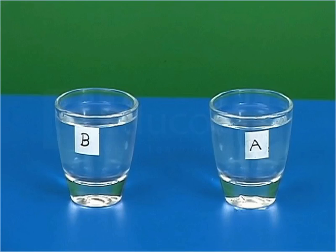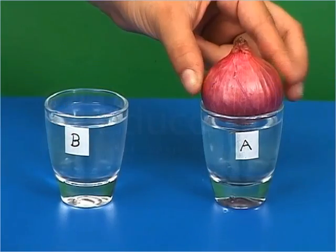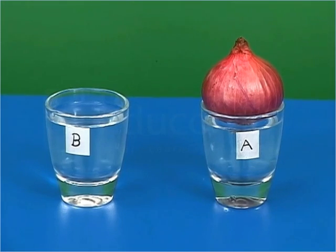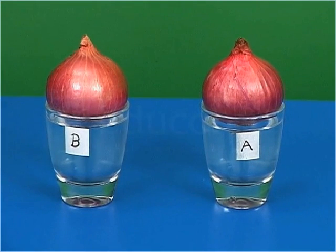Let us now begin the activity. Take two tumblers filled with water and mark these tumblers as A and B. Now take two onion bulbs of the same size and place one in each tumbler such that only the lower surface of the bulb is in contact with the water.